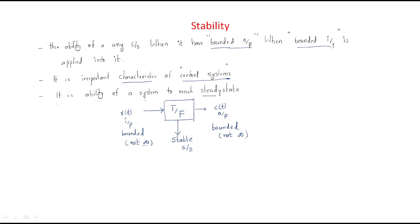Another way to define stability is the ability of a system to reach the steady state. If the system is stable, it will reach the steady state. If the system is unstable, it will not reach the steady state. Steady state means a constant, final output. Otherwise it is not possible to reach the steady state.